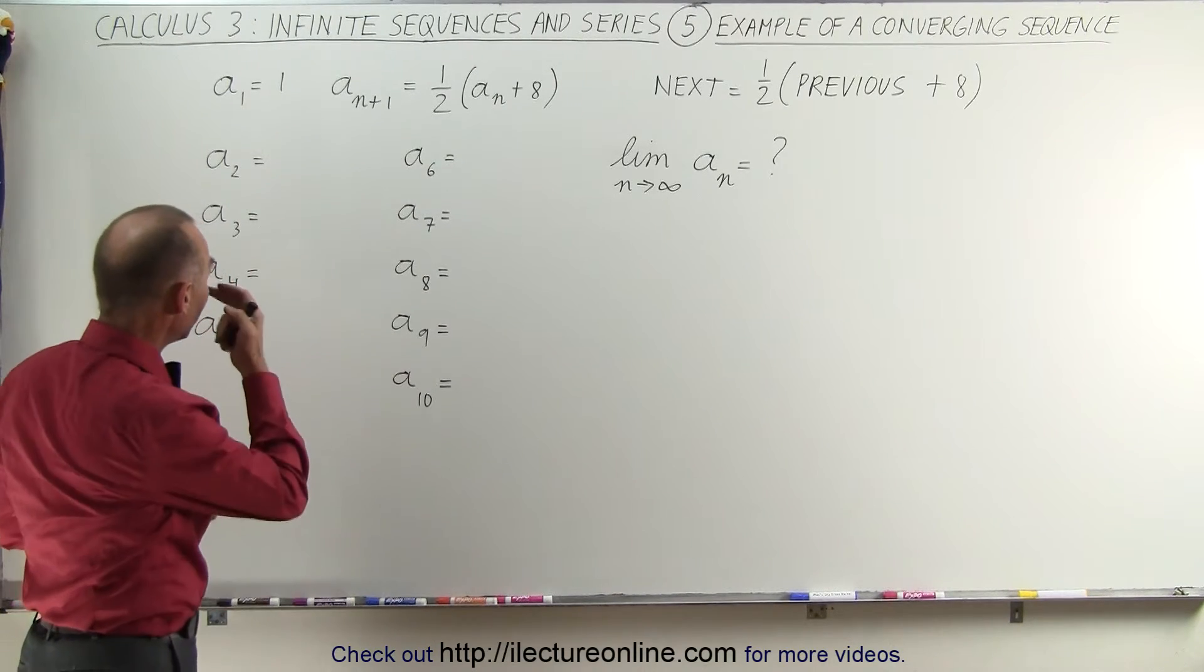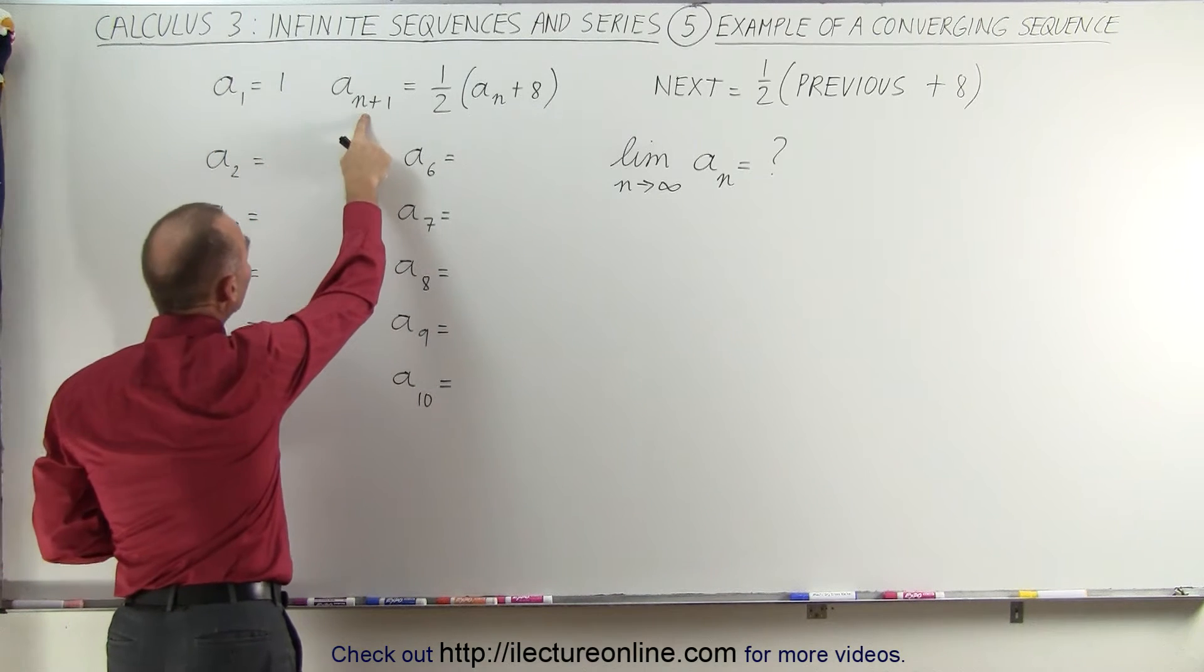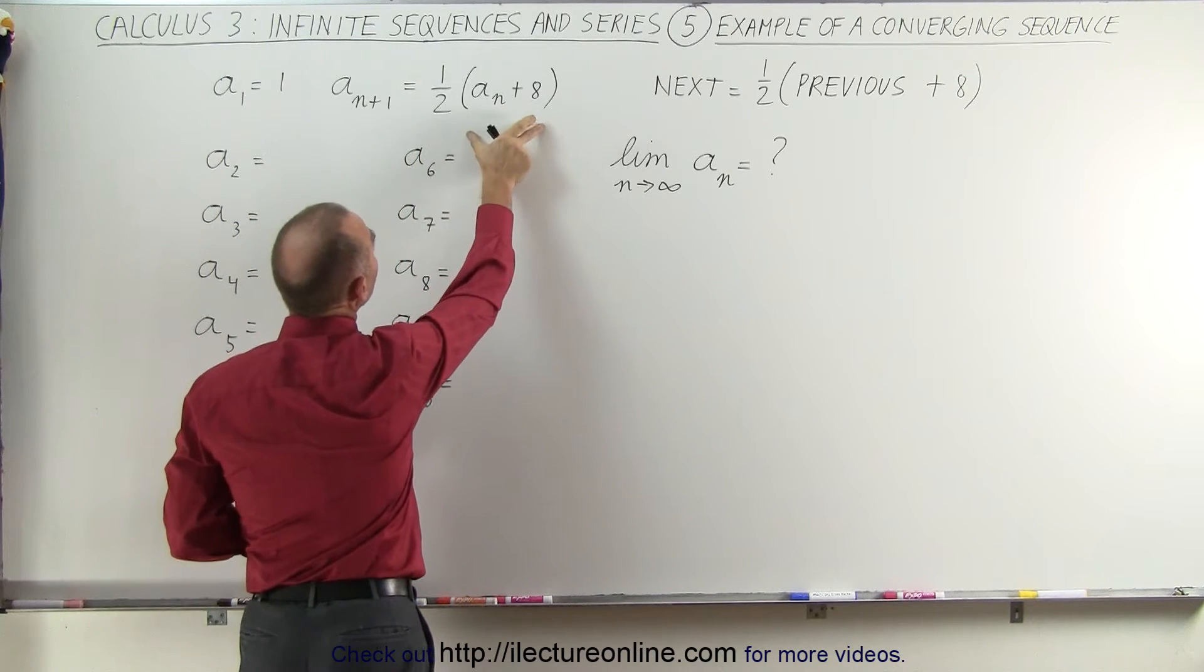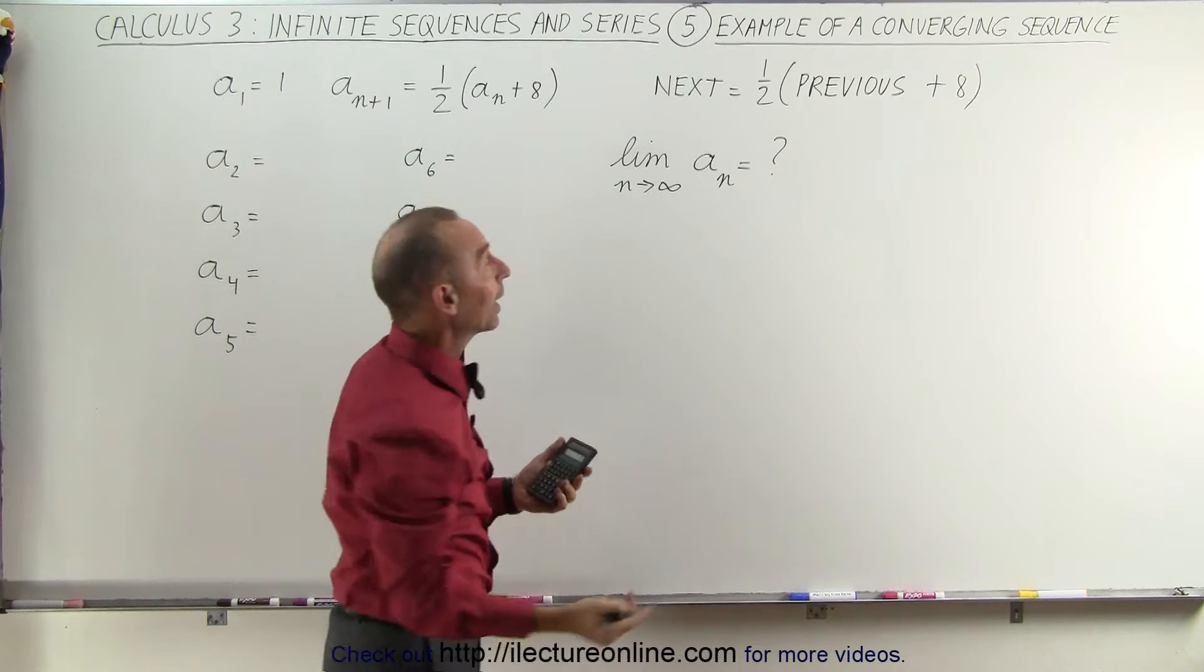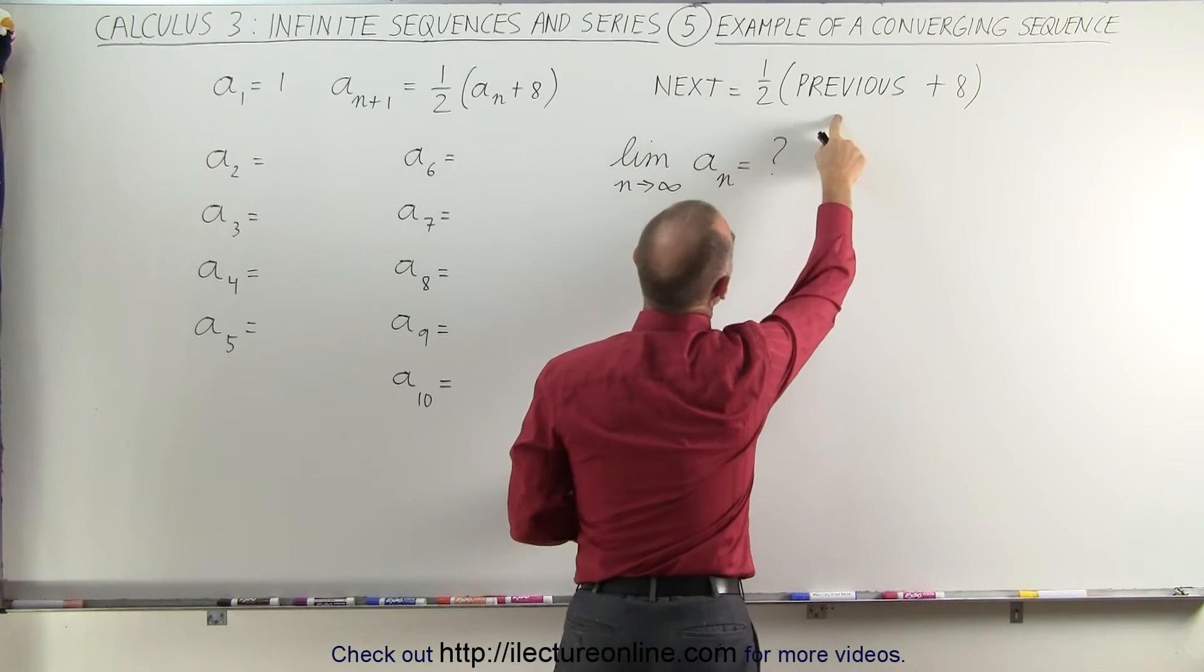The sequence is defined as follows: the first element in the sequence is equal to one, and then the next element in the sequence is equal to one-half times the quantity of the previous element plus eight. So another way of writing that is the next element is equal to one-half the previous element plus eight.